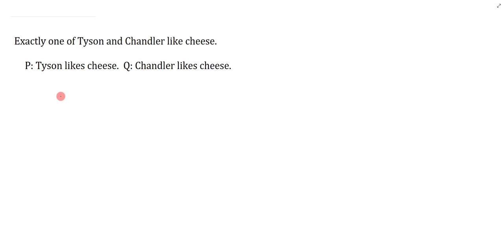Exactly one of Tyson and Chandler like cheese. The only real trick here is how to symbolize exactly one. Exactly one means one or the other but not both, and you can literally symbolize it like that.